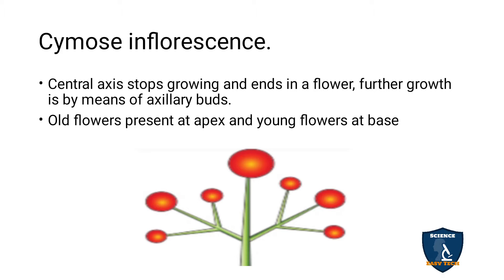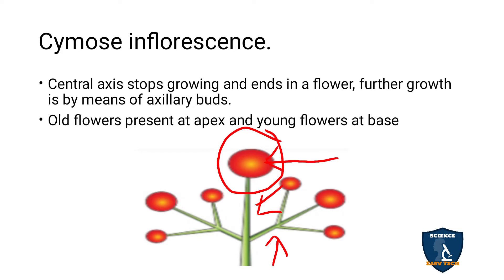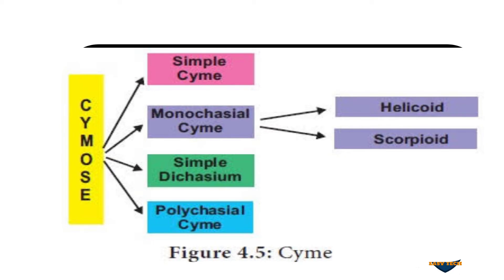In racemose, the growth is indeterminate, that is unlimited, but in cymose, the growth is determinate in the main axis with the floret, so the growth is arrested here. The growth takes place in the axillary buds. The older flowers are seen at the apex and the younger flowers at the lower region, that is at the base. Such type of arrangement is called basipetal succession, or the opening of the flower. The older flower first opens, that is from center to periphery. This is known as centrifugal opening.